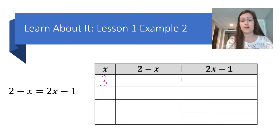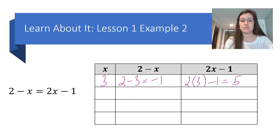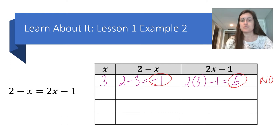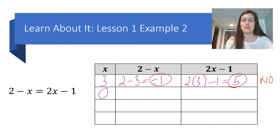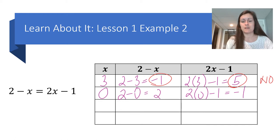If I do, I know that the value I selected was a solution; if I don't, I need to try again. Substituting 3: 2 minus 3 is negative 1, and 2 times 3 minus 1 is 5. My outputs are not the same, so x equals 3 is not a solution. My next friendly number is 0 to make the calculations simpler. 2 minus 0 is 2, and 2 times 0 minus 1 is negative 1 — those outputs are not the same, so x equals 0 is not a solution.